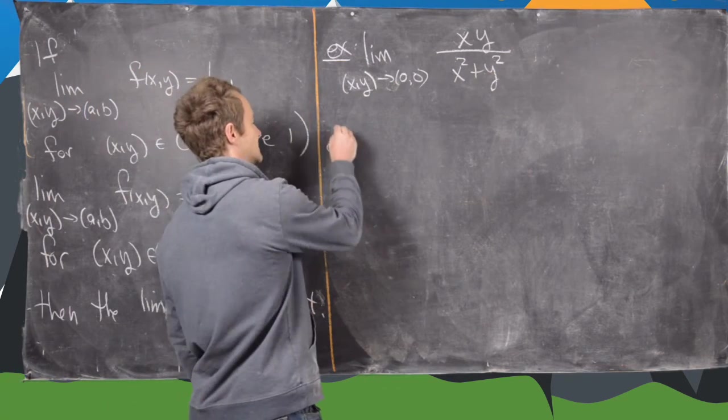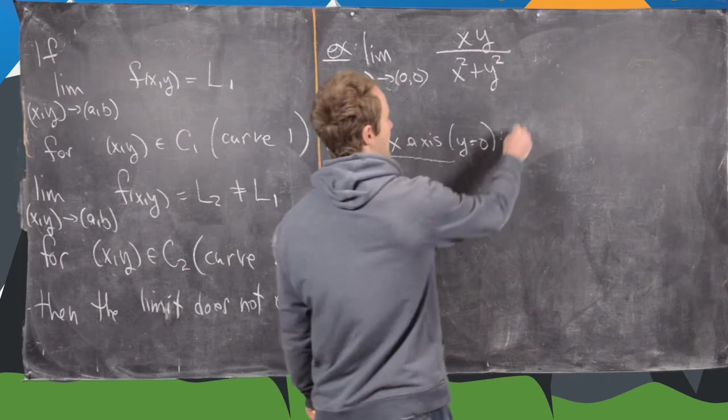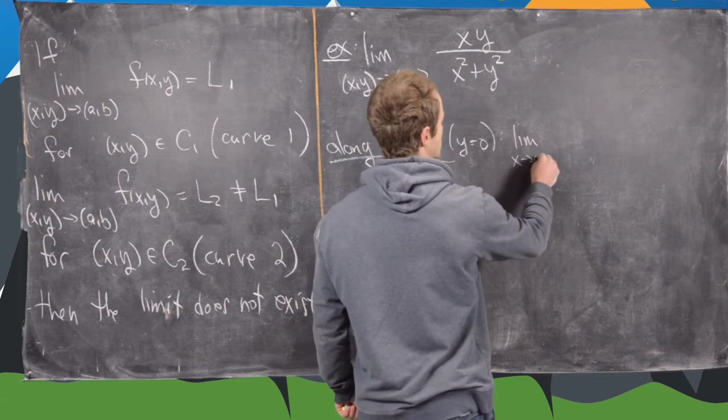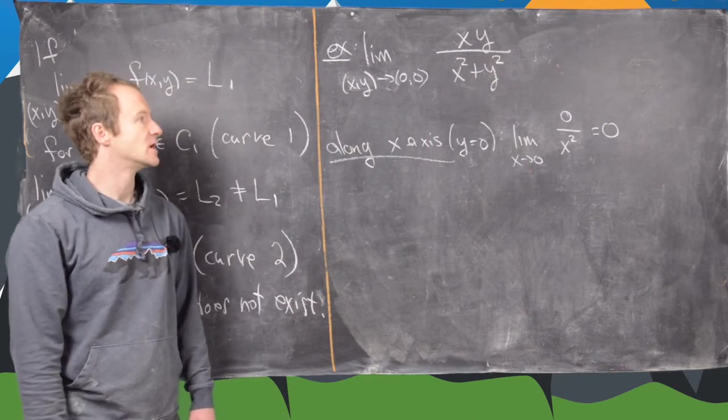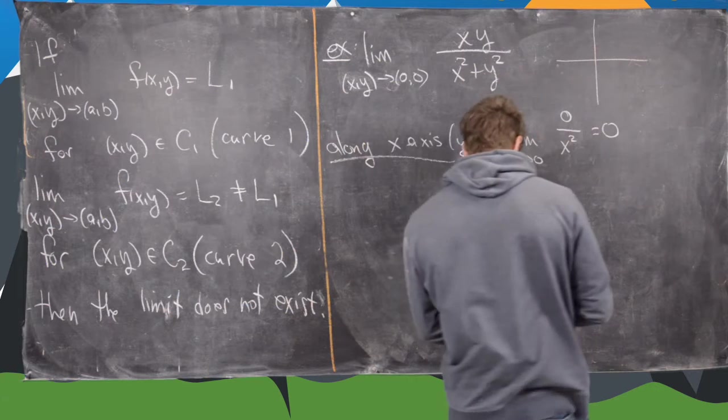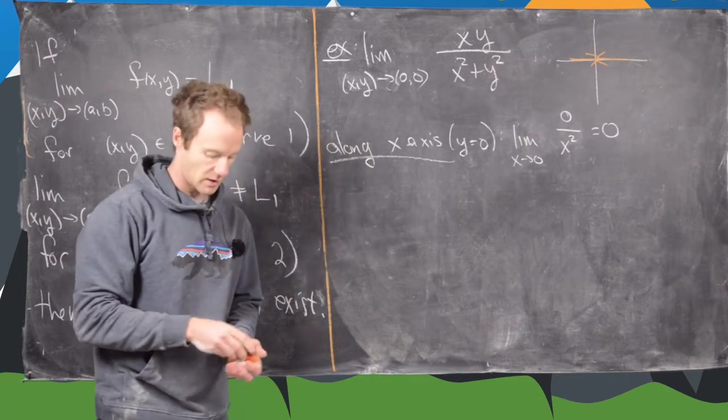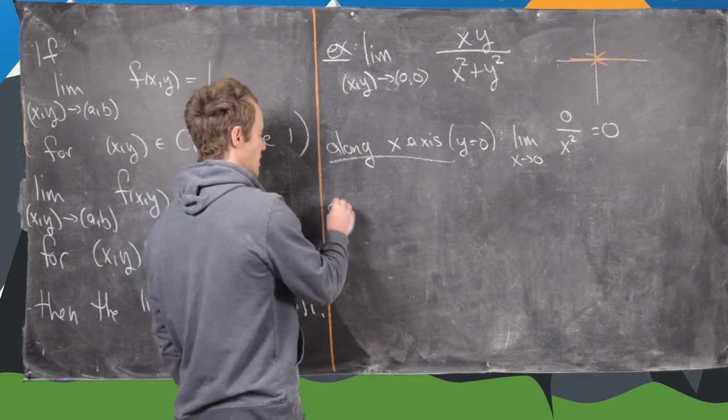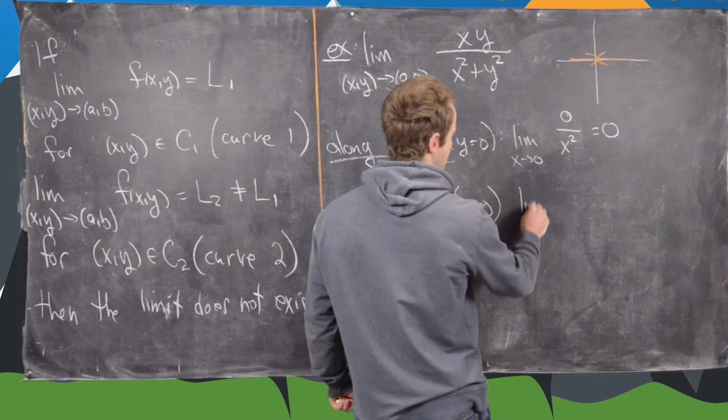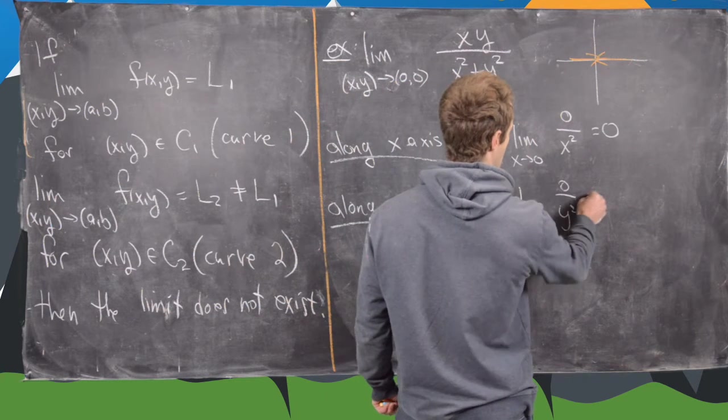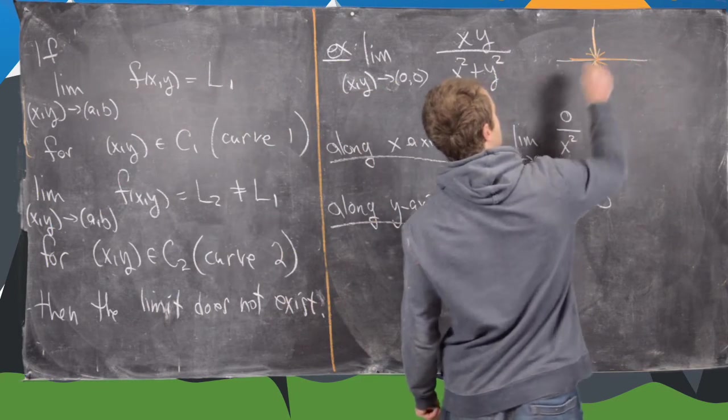We'll first look along the x axis. Recall that's y equals zero, and that's going to turn the limit into the limit as x approaches zero of zero over x squared, which is equal to zero. So here we just went along the x axis, we calculated the limit along that path. Now let's look along the y axis, and you can probably see we're going to get the same thing. This is the limit as y approaches zero of zero over y squared equals zero. Notice those match, and so we have not yet shown that this limit does not exist.